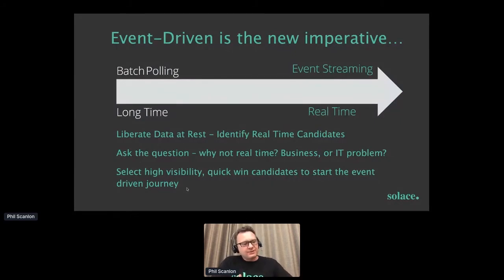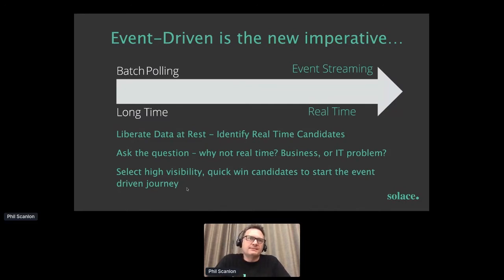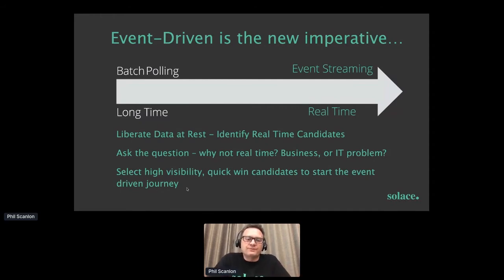Event-driven is driving this new imperative — we're moving away from batch and polling into more streaming, moving away from daily or hourly runs toward real time. Real time can mean minutes, seconds, or milliseconds depending on criticality. For user interaction, less than half a second is not really noticeable, but more than that and people start to notice. If you're building customer experience applications, you need to make sure that interactivity is real time. We also have to understand that the backend systems are not necessarily real time — they may not be able to respond at the scale and volume of users requesting them.